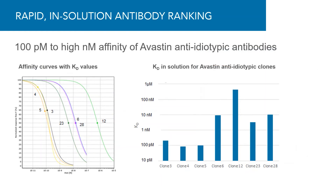This example shows affinity determination of anti-idiotypic clones. Seven different purified clones were analyzed in one Gyrolab run. The generated affinity curves cover three orders of magnitude; curves with the highest affinity are located to the left and low affinity clones to the right. In the bar chart, the resulting KD value is plotted for each clone, with values ranging from sub-100 picomolar to high nanomolar, showing the wide dynamic range of this Gyrolab affinity method.